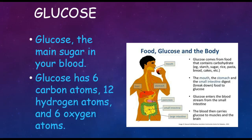Glucose comes from food that contains carbohydrates, such as starches, sugars, rices, pasta, breads, cakes, etc. The mouth, stomach, and small intestine digest the food and break it down to glucose.